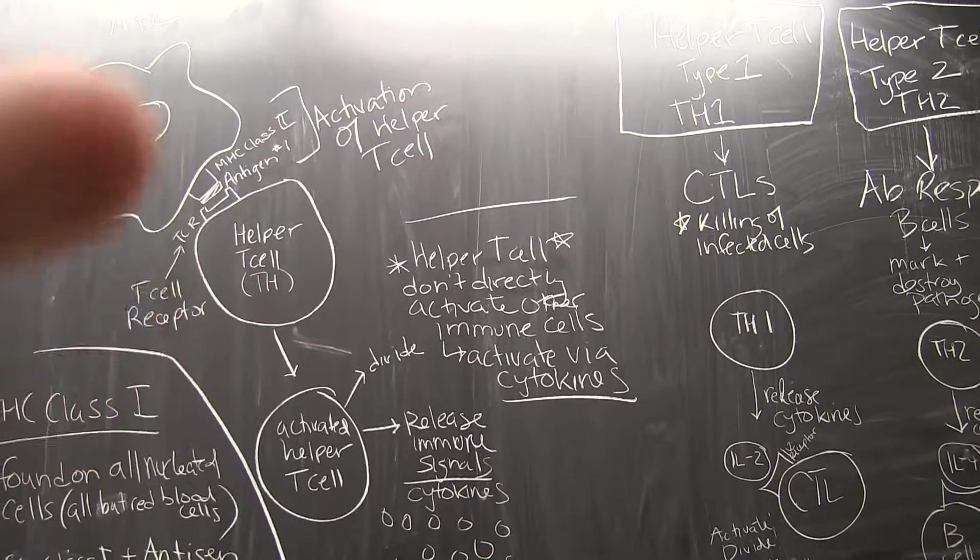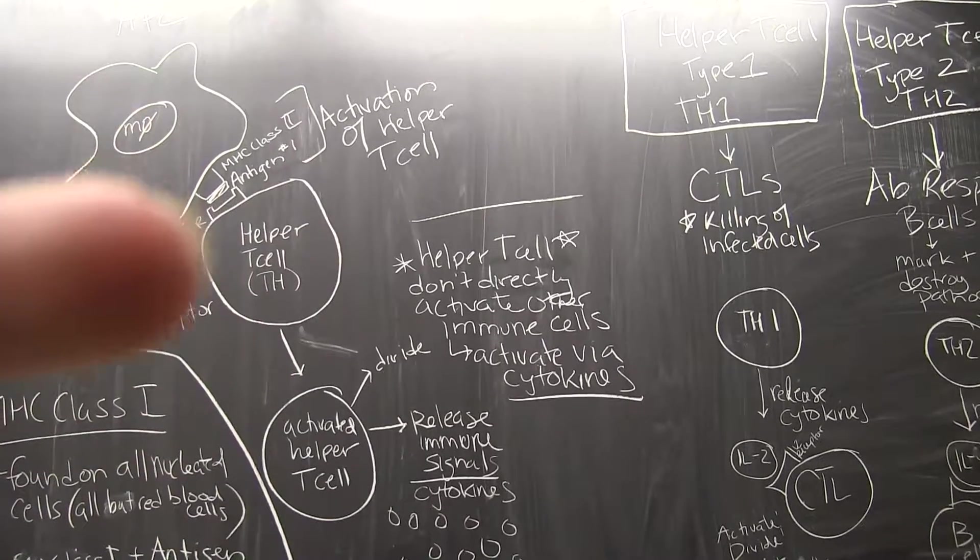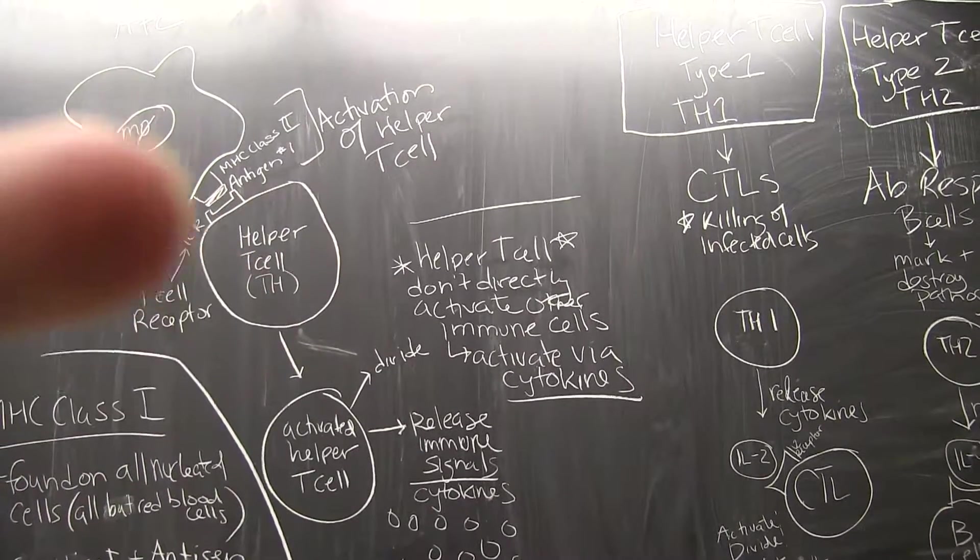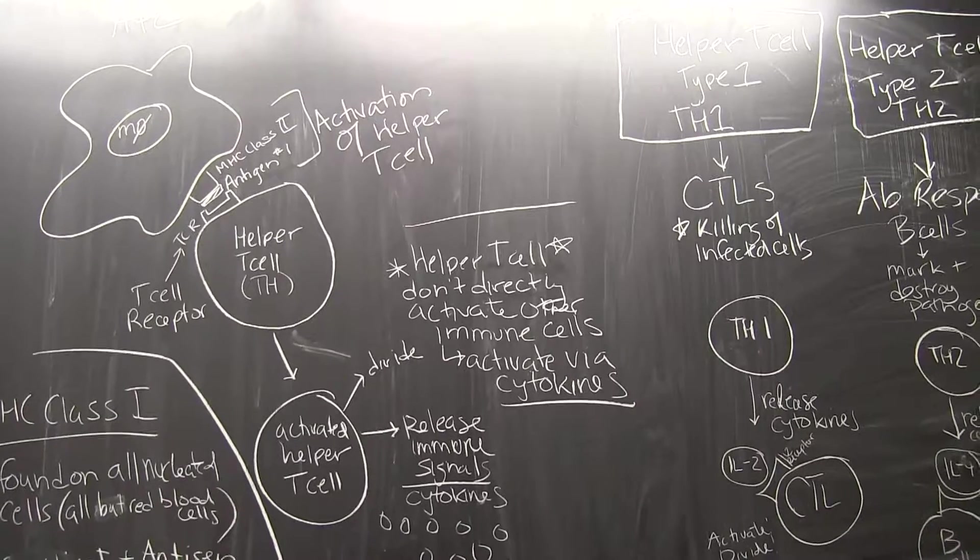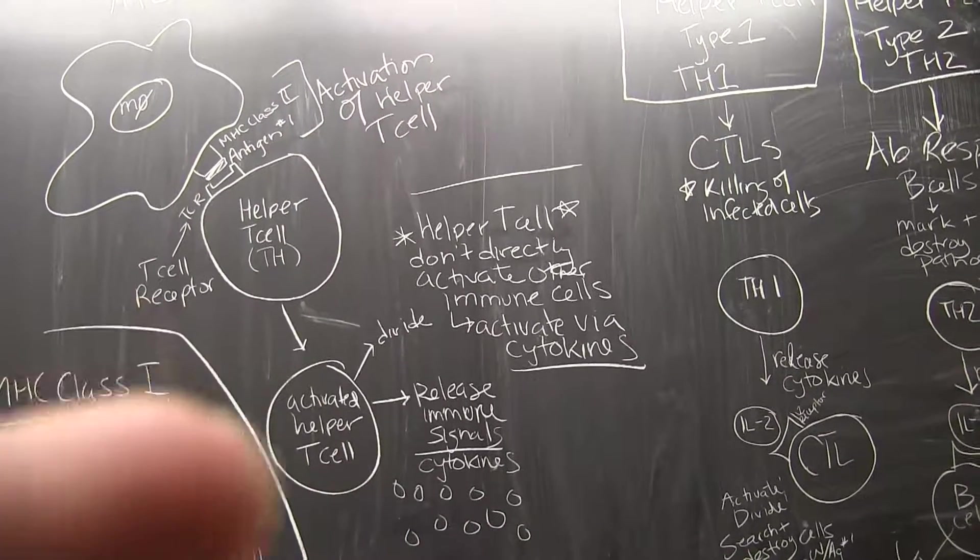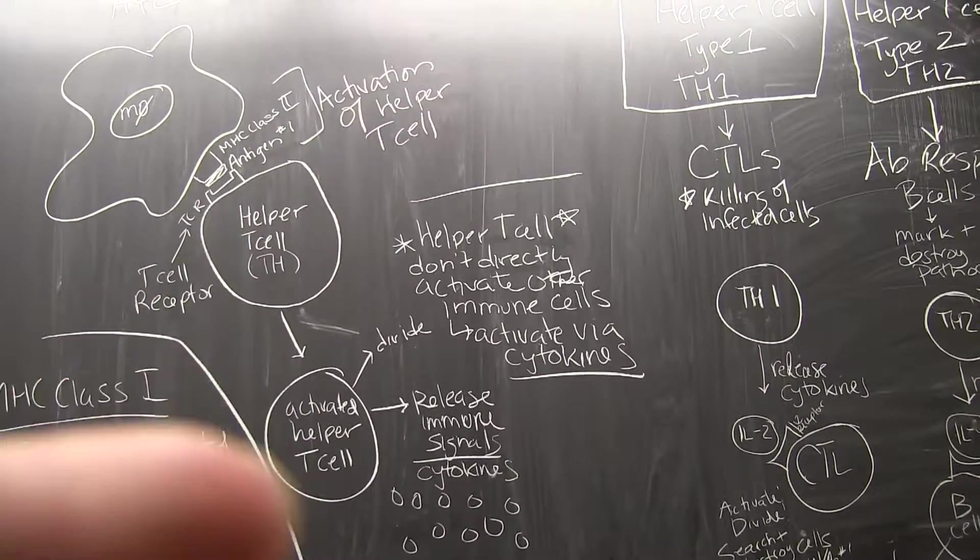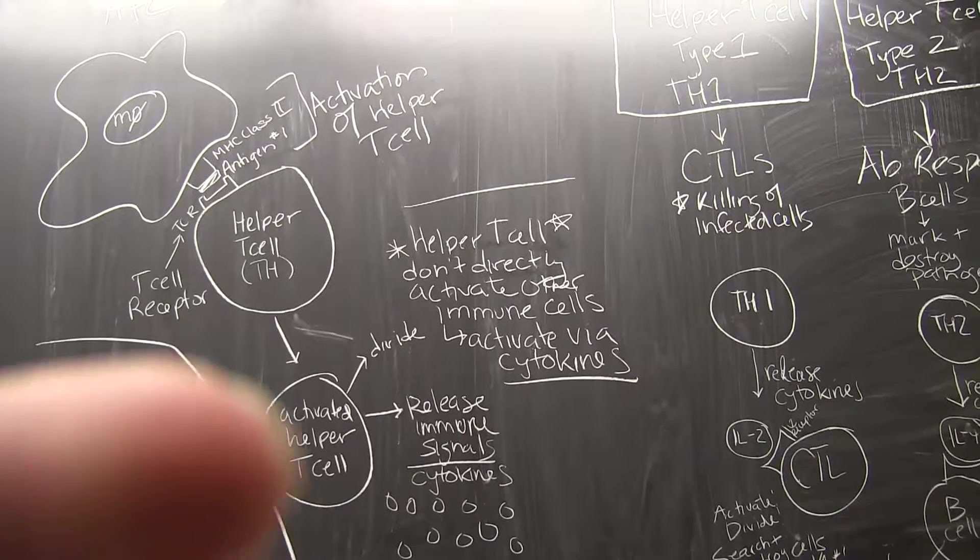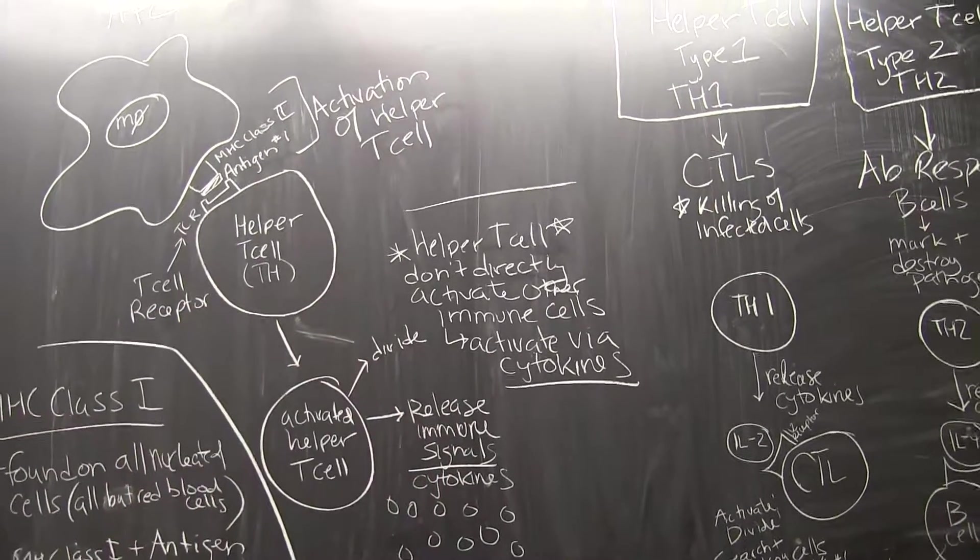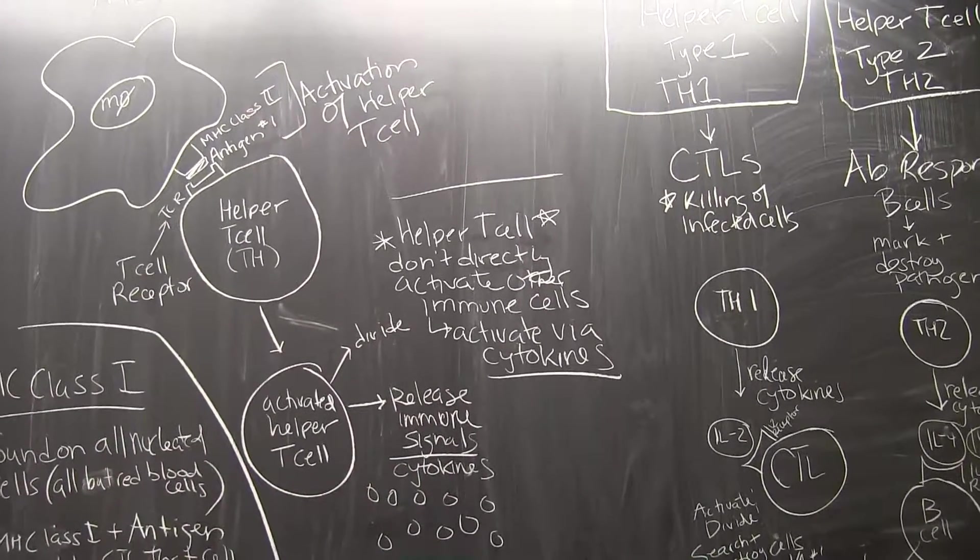Direct activation between an antigen presenting cell and a helper T cell means that they actually bind together to get the signal. Helper T cells are indirect activators of other immune cells and they release immune signals in order to do this.